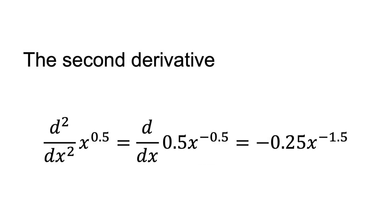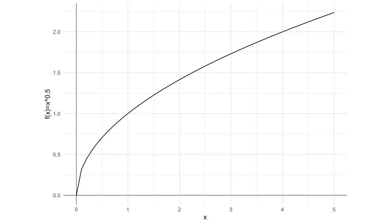The second derivative of x to the power of 0.5 is d squared/dx squared of x to the power of 0.5, equals d/dx of 0.5 times x to the power of minus 0.5, which equals minus 0.25 times x to the power of minus 1.5. The second derivative is negative for all values of x for which x to the power of 0.5 is defined. This implies that x to the power of 0.5 is increasing at a decreasing rate — the function is concave. You can see this in the plot.